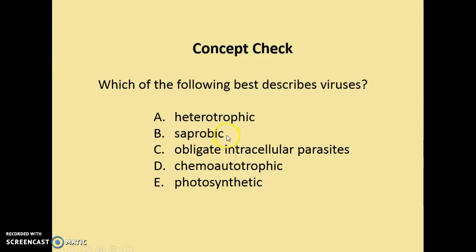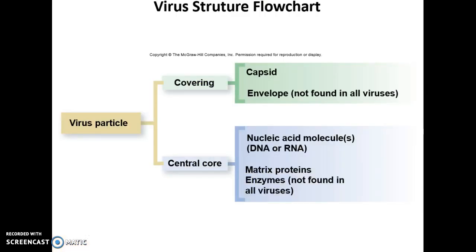If they were saprotrophic, hopefully you remember that word is used to describe fungi — getting their nutrients from dead or dying material. Heterotrophic means relying on some other source of nutritional support. Chemotrophic means utilizing chemicals. Photosynthetic means utilizing the sun and chloroplasts.